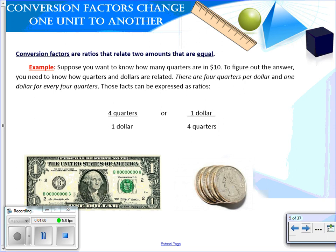Conversion factors are ratios that relate to units that are equal. So you know that there are four quarters and one dollar. We would say this is a conversion factor. They are equivalent to each other. The units, although different, they have the same value. And you could write the quarters on top or you could write the quarters on bottom. Either way, these are equivalent and that ratio is equal to one.